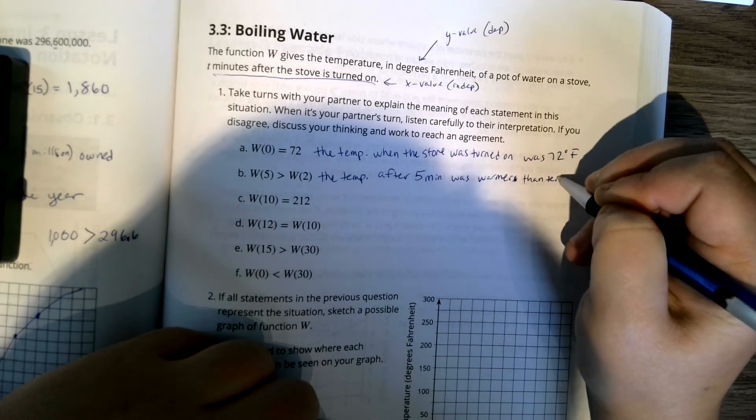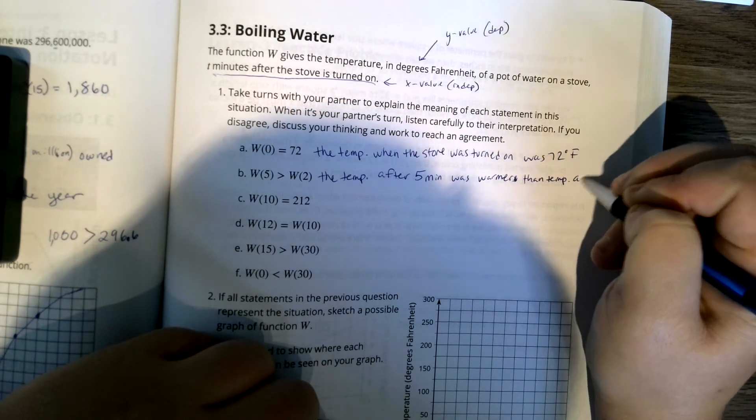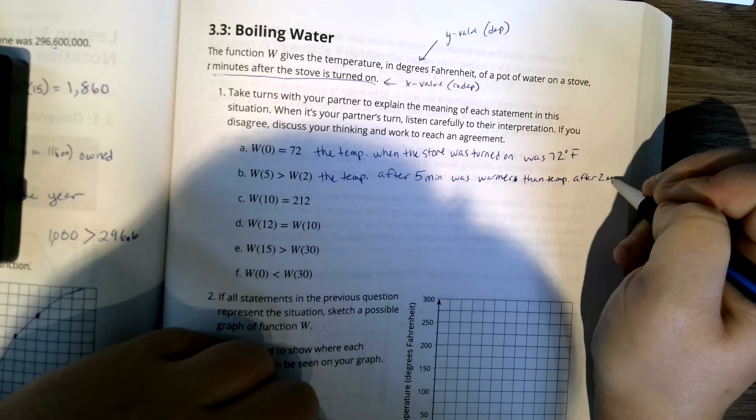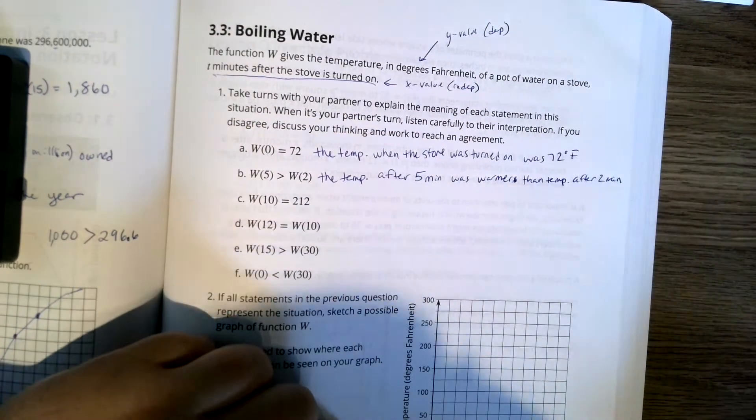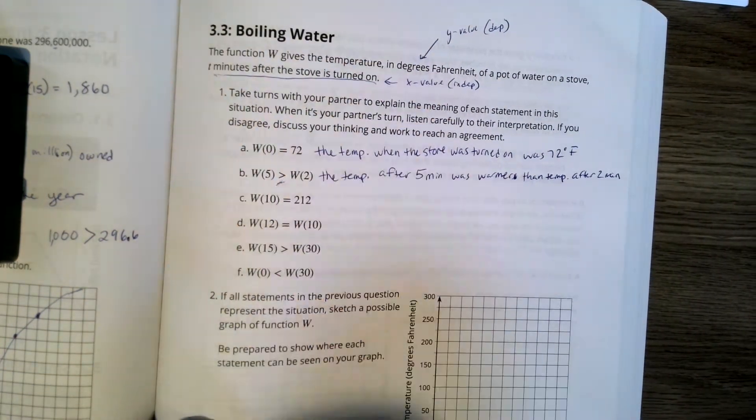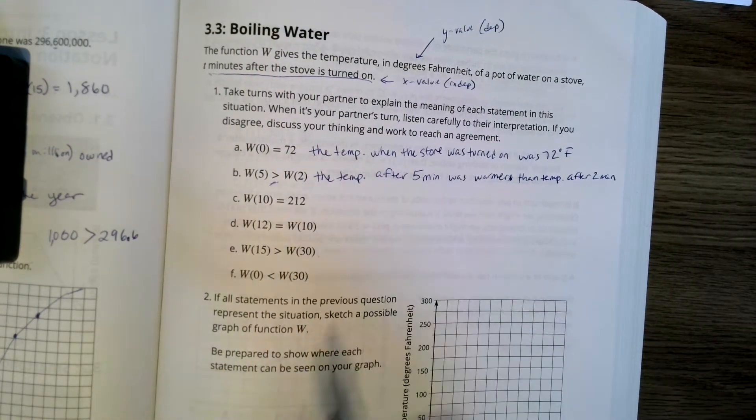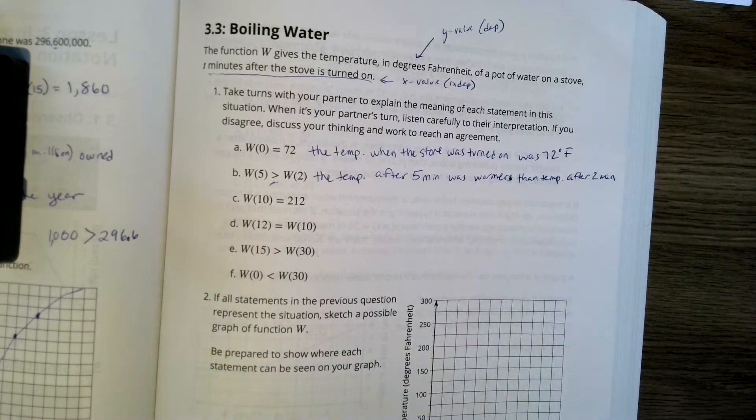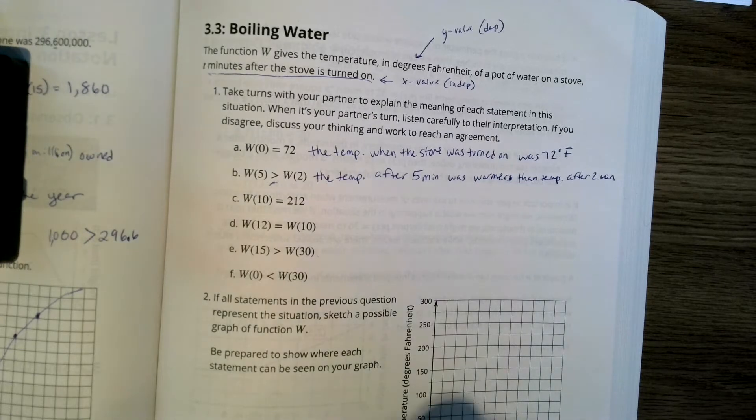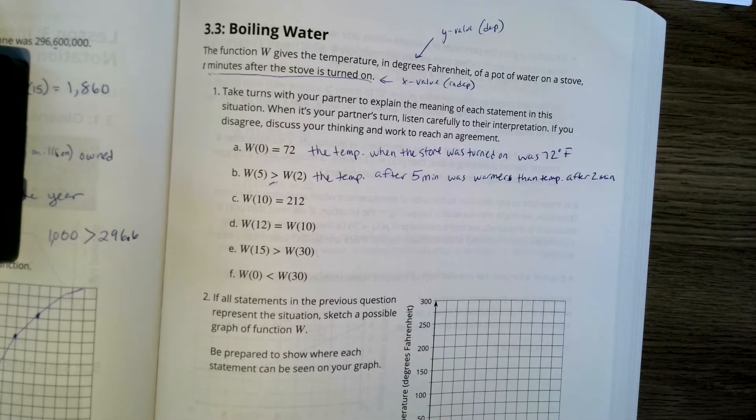We don't know the temperature in either of these, but because it's an inequality statement, we know that at least the temperature after 5 minutes was warmer or greater or hotter than the temperature after 2 minutes.